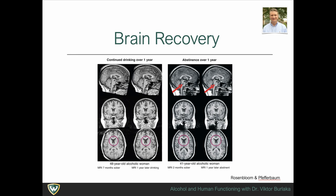fMRI studies clearly show that heavy, repeated, chronic substance misuse leads to changes in brain functioning that remain long after substance use stops. Over time, however, the brain begins to recover. Magnetic resonance images show the contrast between an alcoholic woman who continues to drink and one who maintains sobriety, demonstrating expansion of the lateral ventricles with continued drinking and reduction with sobriety, and resolution of a lesion in the pons after a year of abstinence.